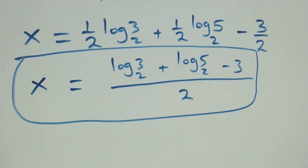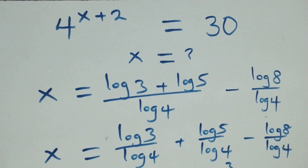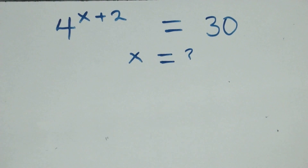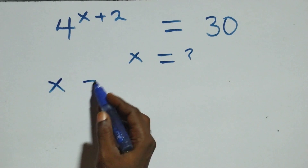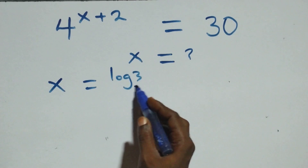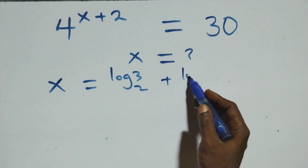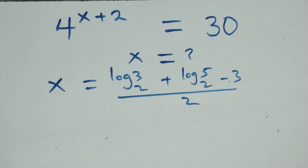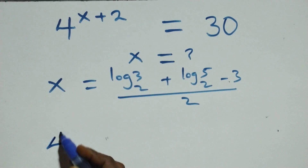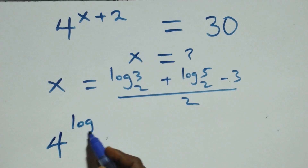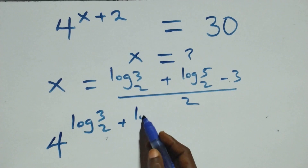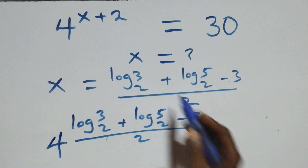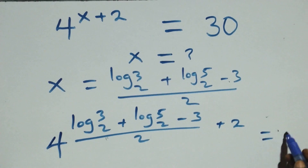Let's check here — let's verify that this satisfies the given problem. We substitute the value of x, which is log₂3 plus log₂5 minus 3, all over 2. Then we have 4 raised to power x, which is that expression, plus 2 — is it equals to 30?